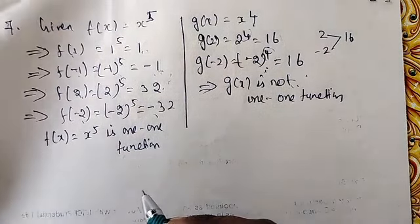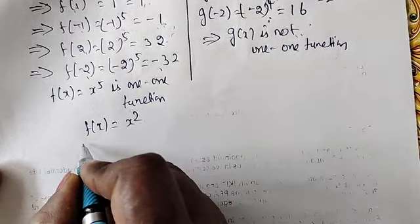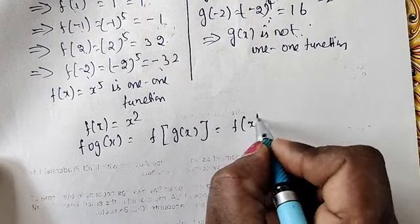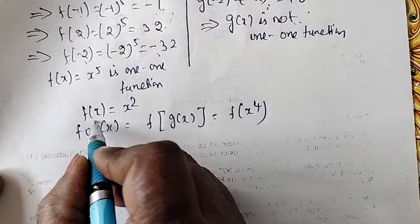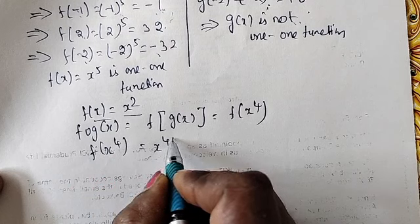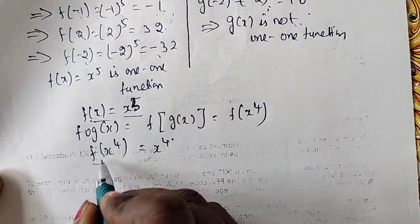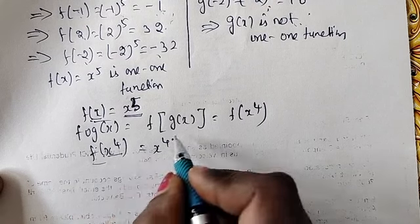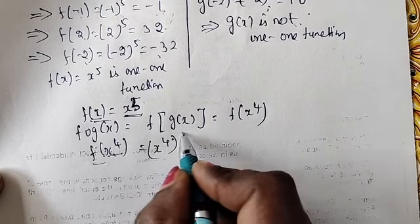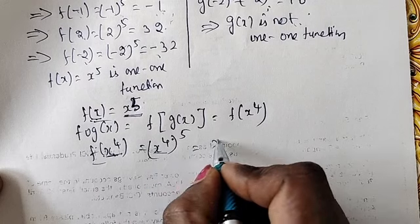Next, find out if fog(x) is a 1-to-1 function. fog(x) = f(g(x)). Since g(x) = x^4, we get f(x^4). And since f(x) = x^5, replacing x with x^4 gives f(x^4) = (x^4)^5 = x^20.